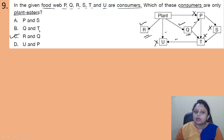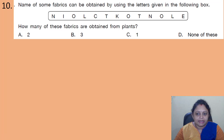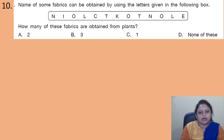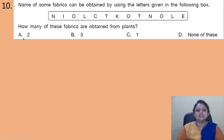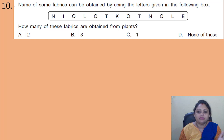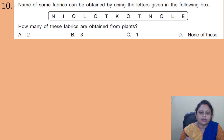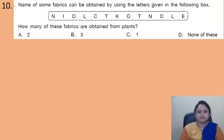Coming to the next question: names of some fabrics can be obtained using the letters given in the box. How many of these fabrics are obtained from plants? Options: A - 2; B - 3; C - 1; D - none of these. Fabrics obtained from plants include cotton, hemp, jute, and flax. From the given letters, we can form 'cotton' only. So the correct answer is option C — one fabric obtained from plants.